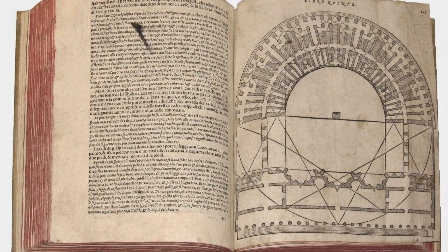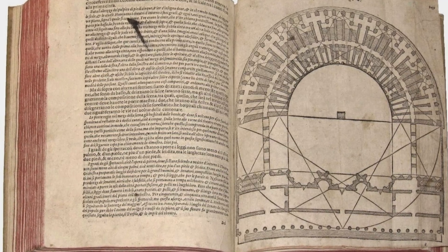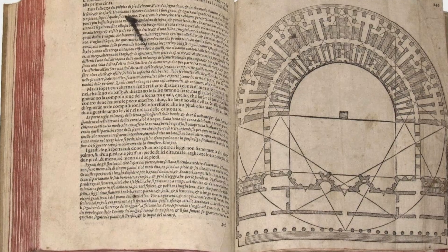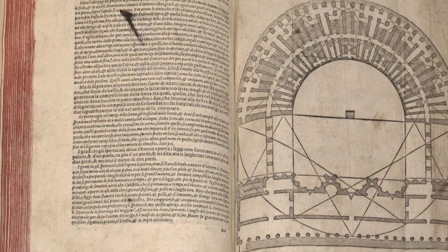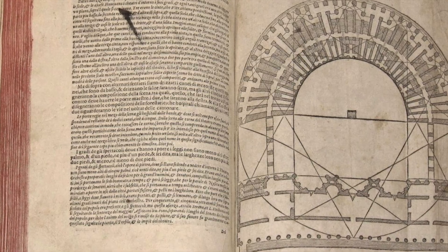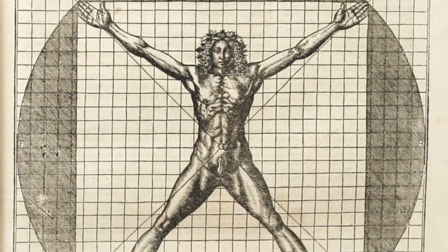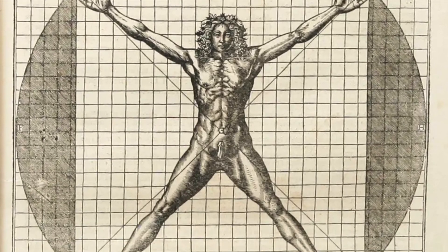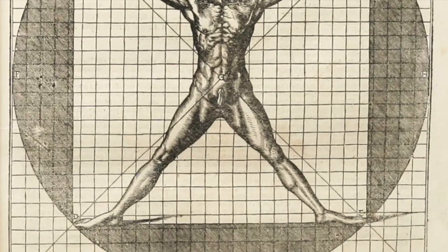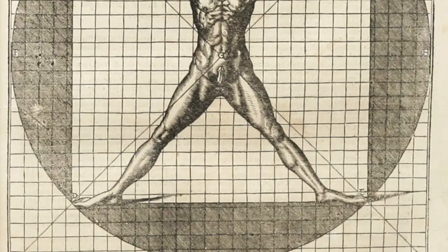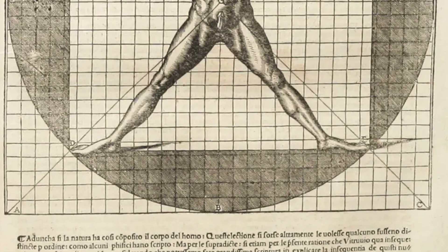Ancient texts such as Vitruvius's De Architectura offered models of proportion rooted in mathematics and the human body. Vitruvius's idea that 'without symmetry and proportion there can be no principles in the designs of any temple' resonated deeply with Renaissance artists who equated architectural harmony with universal truth.